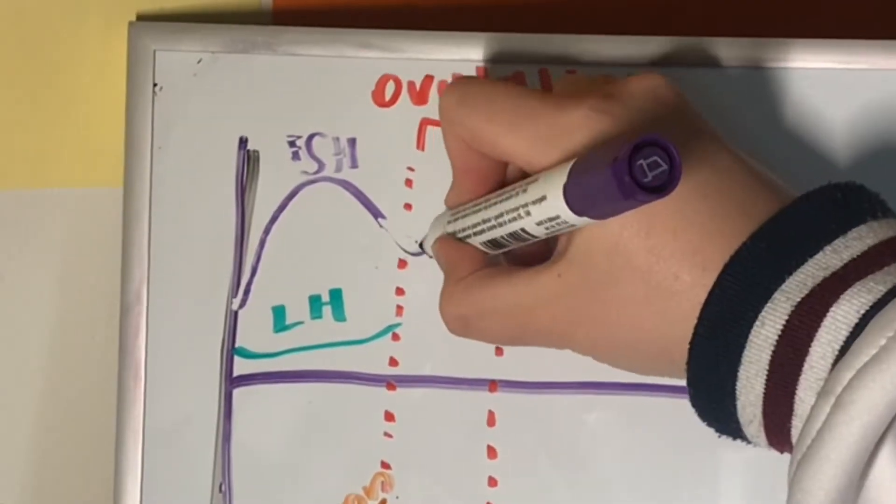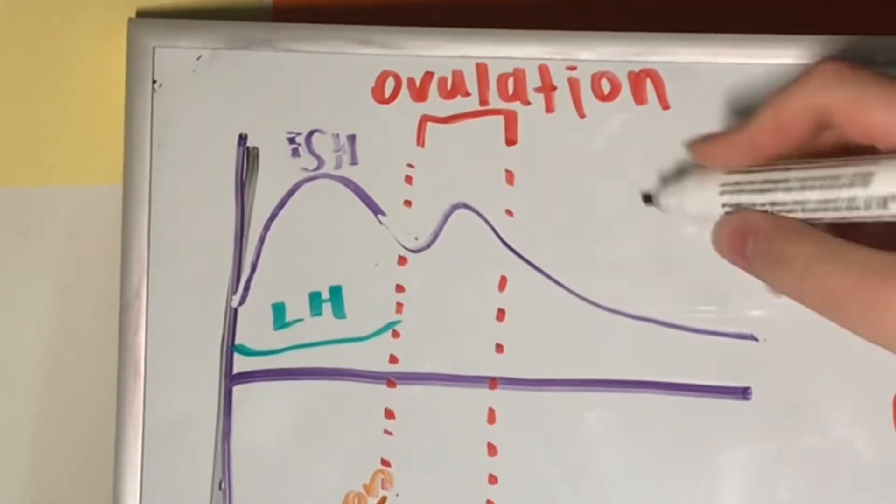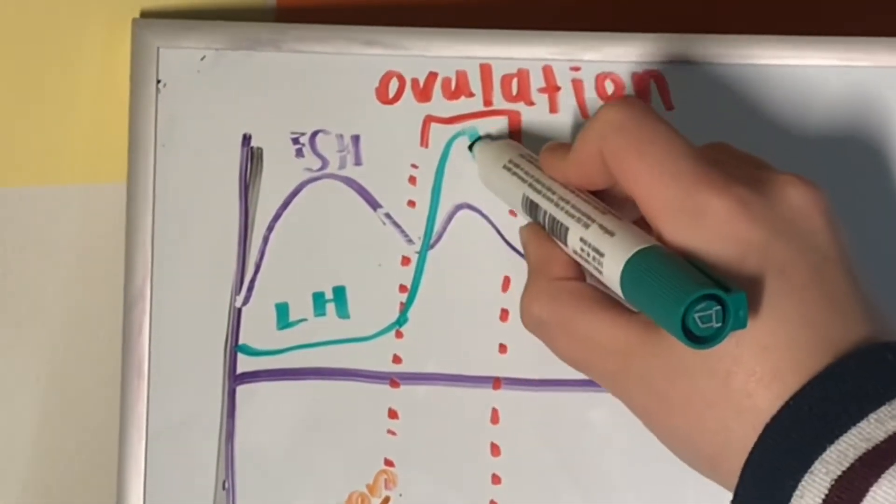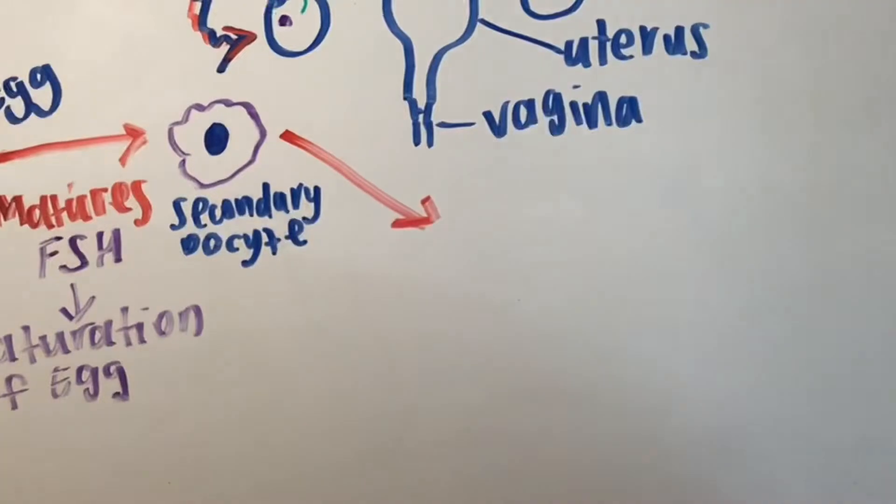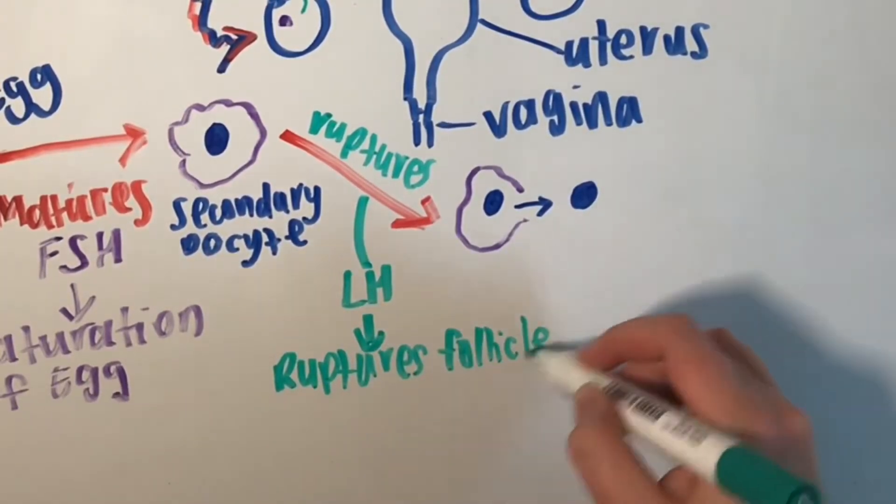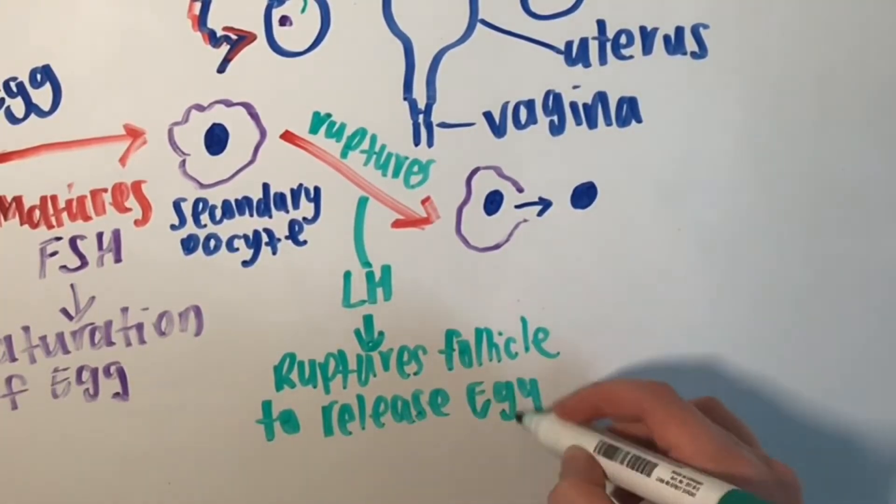After maturing, around day 13 of the menstrual cycle, estrogen will increase in concentration hence there is a surge in LH. This will trigger the release of an egg from the ovary by rupturing the most mature follicle to release the secondary oocyte from the ovary. This is known as ovulation.